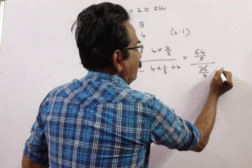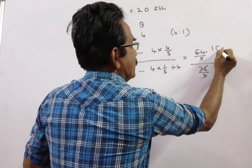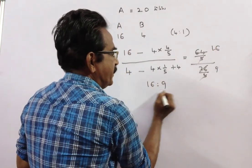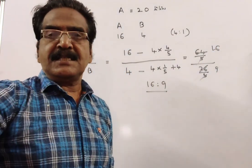5 gets cancelled, 4 minus 4 sixteenths. So the final ratio of A and B in the mixture is 16 is to 9.